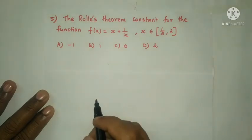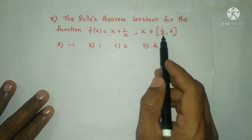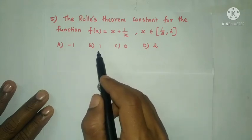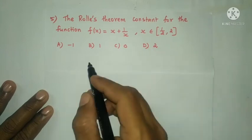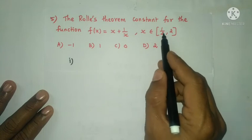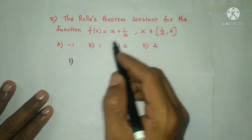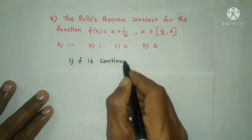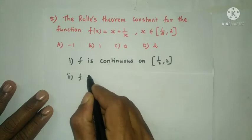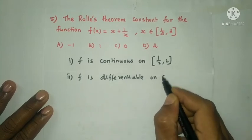Next question: the Rolle's theorem constant for the function f(x) = x + 1/x where x belongs to the closed interval [1/2, 2]. Options: option A is −1, option B is 1, option C is 0, option D is 2. First, checking the conditions: f(x) is continuous on the closed interval [1/2, 2].